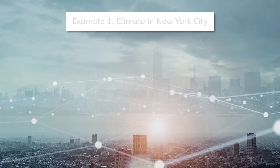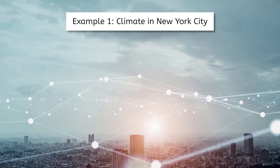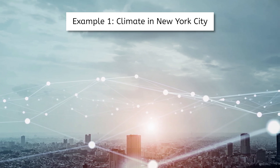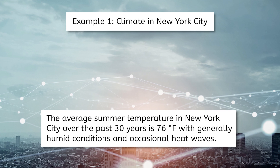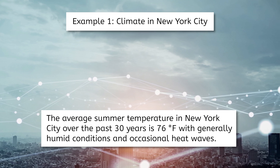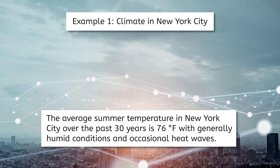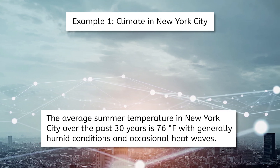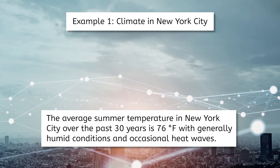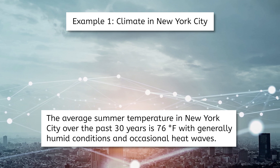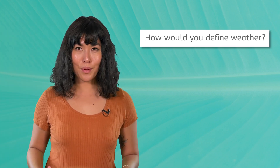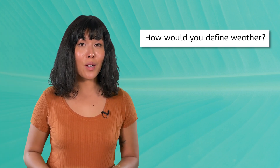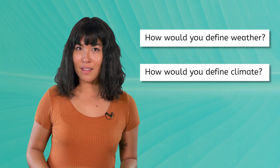Now, let's look at an example of climate. We'll keep New York City as our location. The average summer temperature in New York City over the past 30 years is 76 degrees Fahrenheit, with generally humid conditions and occasional heat waves. From these two examples, how would you define weather? How about climate?